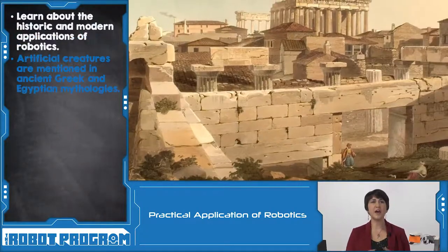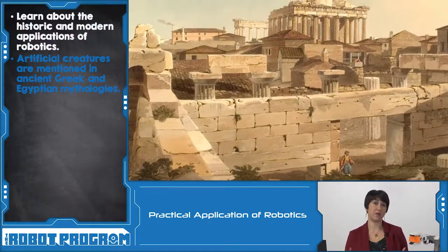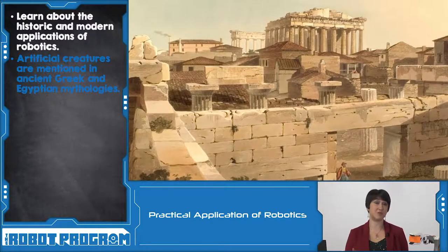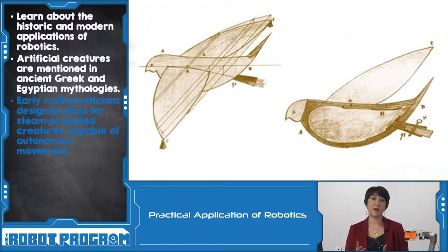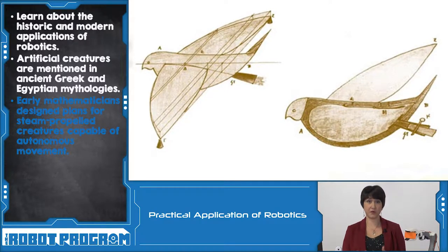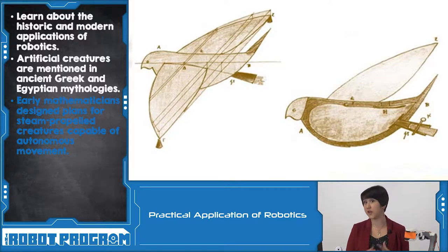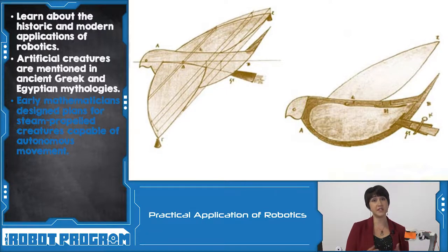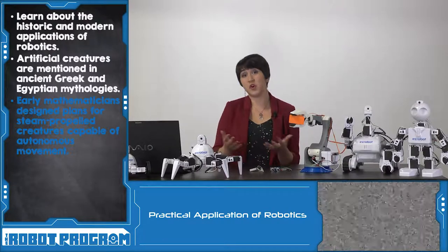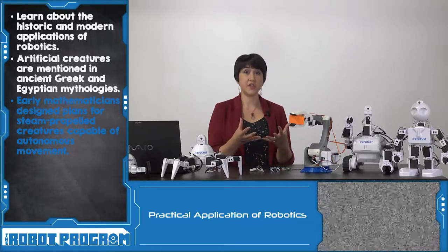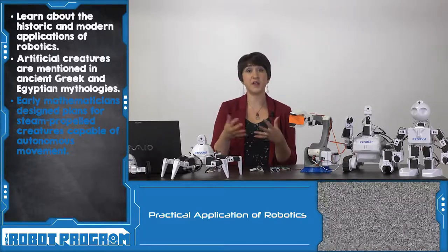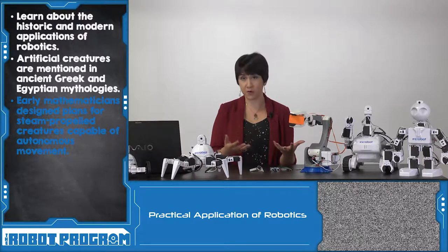The idea of artificial or mechanical people has been around since ancient Greece and ancient Egyptian mythology. One ancient Greek mathematician had plans for a steam-propelled bird — a mechanical bird that could fly on its own using steam as its method of propulsion. This is an example of early robotics: a creature mimicking something in real life that can move on its own without any organic components.